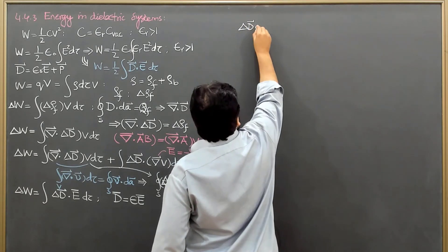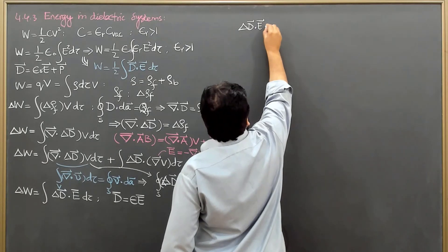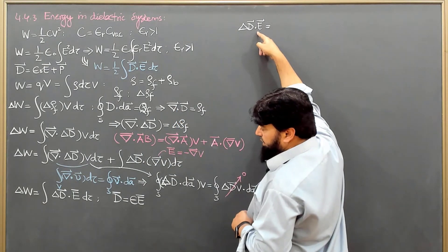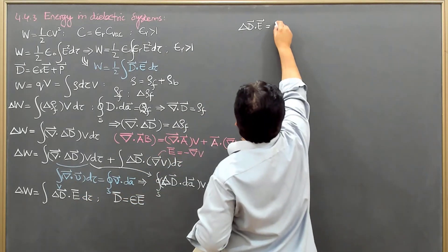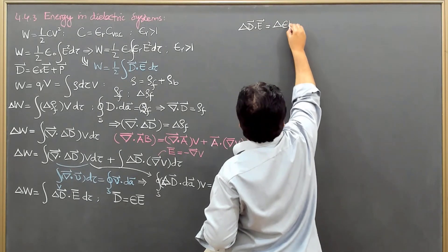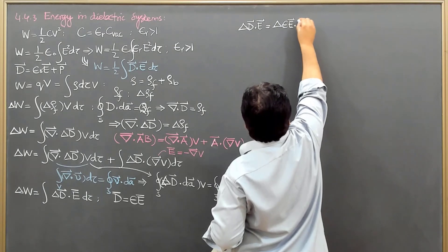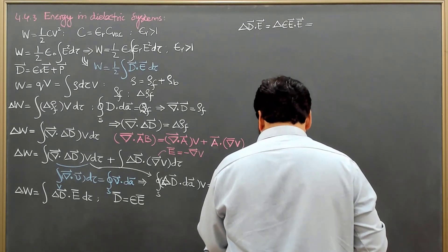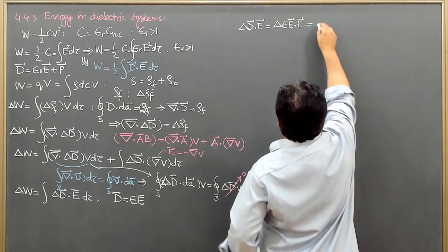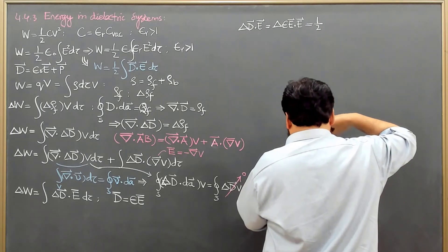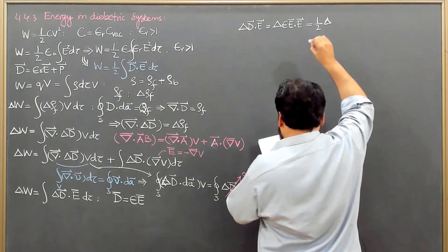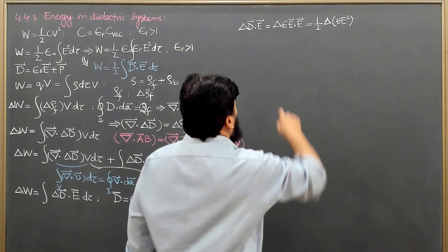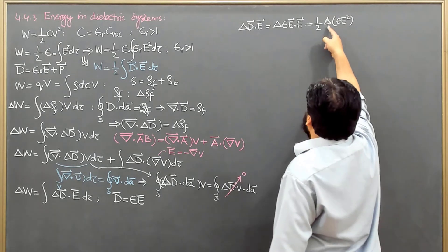Del·D·E is equivalent to — for a linear dielectric material, I can write this as Del of (εE)·E. This can be further written as (1/2)δ(εE²), because this is a change like a derivative.